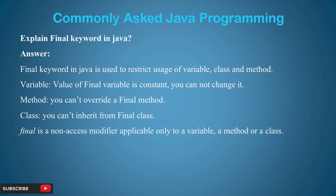Explain the final keyword in Java. This question is very important — even if you are a novice in Java, this is a favorite of all interviewers. In Java, the final keyword is used to restrict users of a variable, class, and methods. If any variable you define as final, then it is constant. The value of a final variable is constant — once it is declared, you cannot change it.